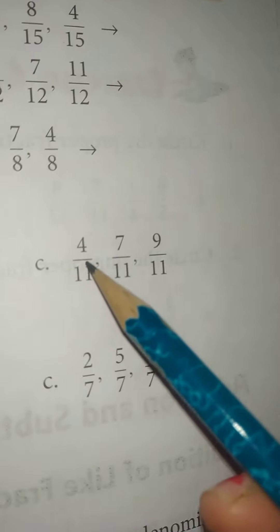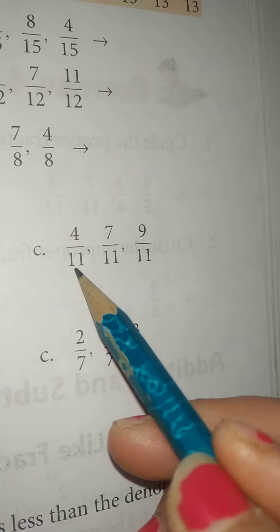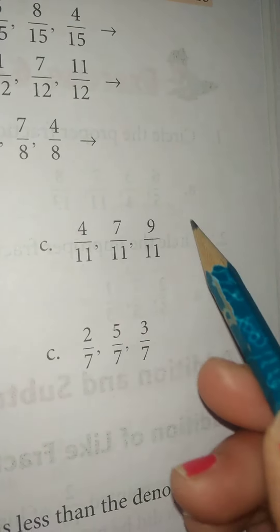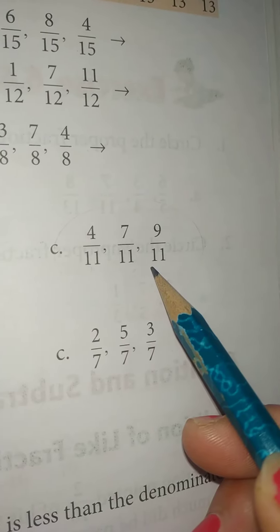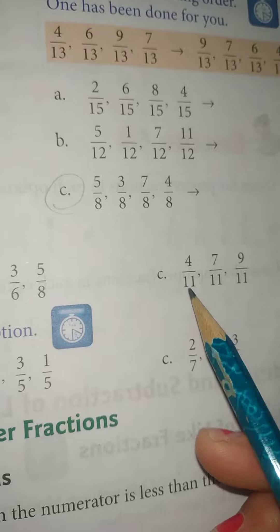Then c, 4 by 11, 7 by 11, and 9 by 11, in sabke denominator same hai. It means yye kaisa fraction hooga? Like fraction, toh isko bhi hum circle kar lenge. Toh yye haa par a and c, like fractions ke group hai.